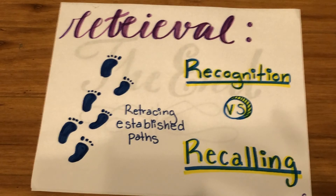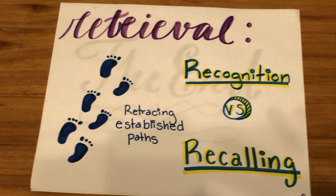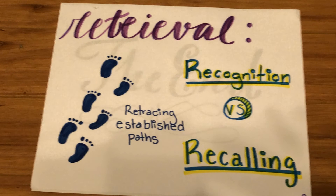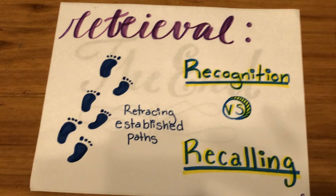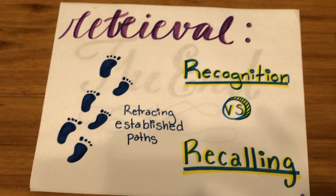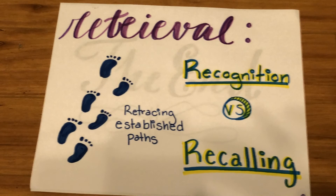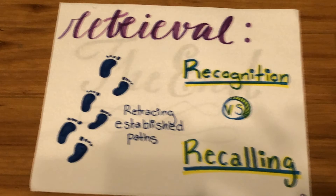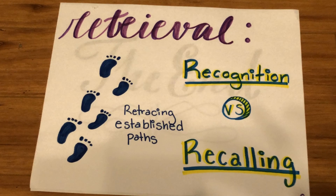Remembering, or retrieval, is performed by the brain retracing the pattern of neural activity that happened when the memory was first encoded. There are two methods of retrieval: recognition — recognizing something you've seen before when it's in front of you — or recalling, remembering a fact or event that's not currently happening.